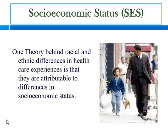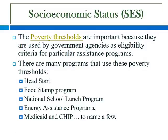One theory behind racial and ethnic differences in health care experiences is that they are attributable to differences in socioeconomic status. The poverty thresholds are important because they are used by government agencies as eligibility criteria for particular assistance programs. There are many programs that use these poverty thresholds, such as Head Start Centers, which are services for children with disabilities, food stamp programs, the national school lunch program, energy assistance programs, and Medicaid and CHIP, just to name a few.